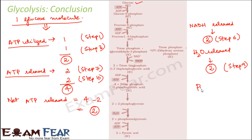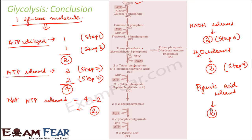And of course, the final product is pyruvic acid. Pyruvic acid was released — 2 molecules of pyruvic acid formed in step 10, because that was the final product.